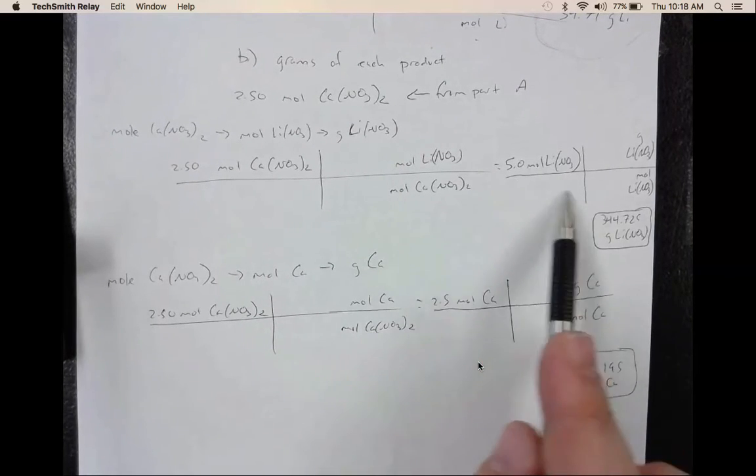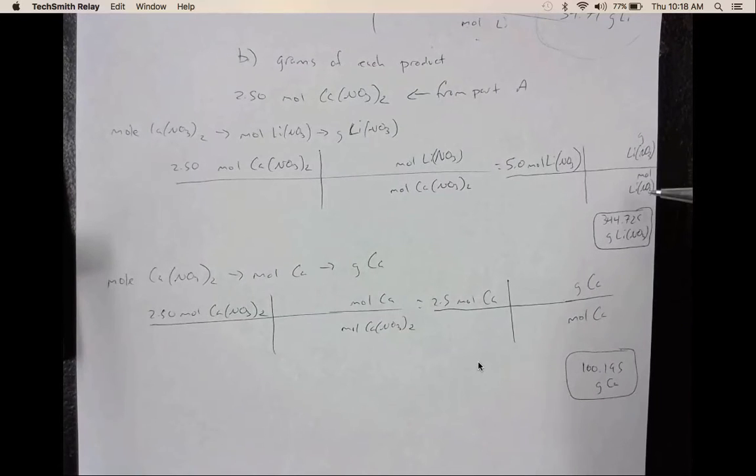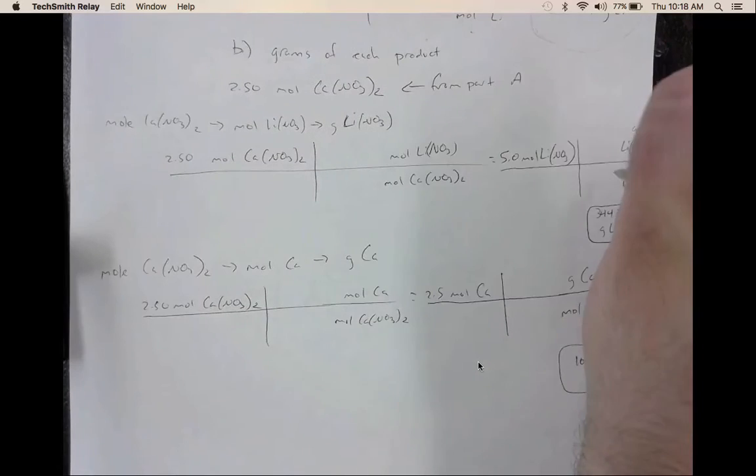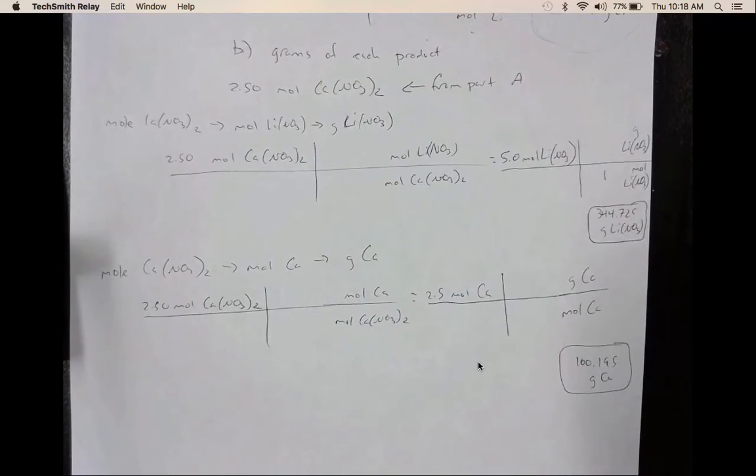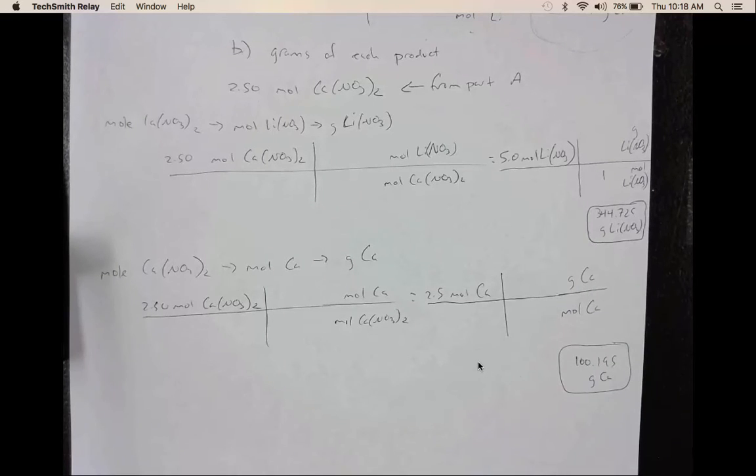So what I did here was I set up my next T without writing another line. So I set up my next T, and in this T, I'm converting to grams. Remember, whenever you have a mass, it's always the mass of one mole of something. Then you add up the mass on the periodic table and plug that in here. When you solve, it should be 344.725.